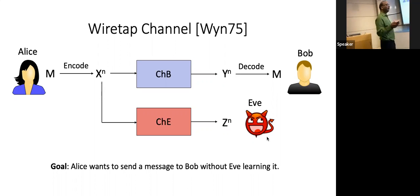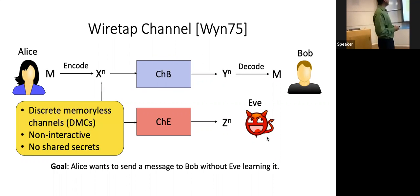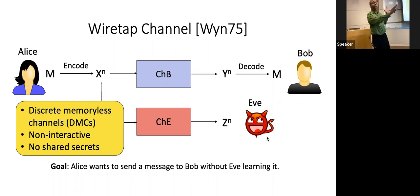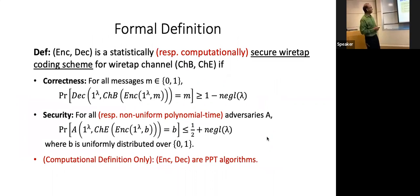The basic task is that Alice wants to communicate with Bob without Eve learning her messages. We're in a very simple setting: discrete memoryless channels like the binary symmetric channel. It's completely non-interactive — Bob is not allowed to respond, there's no feedback, and there's no shared secret. Alice and Bob have never met; they just happen to have this channel over which Alice can communicate with Bob. This was introduced back in 1975. I have a formal security definition here but I'll skip over it — happy to go back if you want.